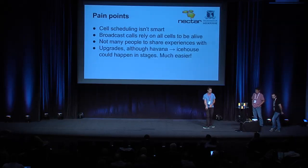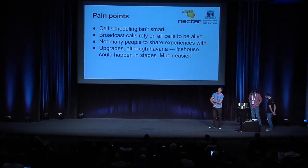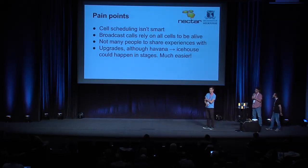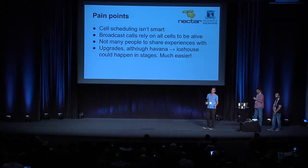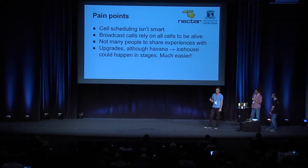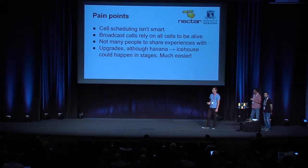Some of the pain points with cells: cells is still deemed an experimental feature. Some of the scheduling problems — if you launch an instance and it goes to one cell and for some reason that cell is broken, it's not going to try a different cell. It's kind of dead in the water. Also, some of the information the scheduler has is not really enough to schedule to a certain cell. It might be advertising a lot of memory, whereas what you're asking for is compute cores, and it will send you to the wrong cell.